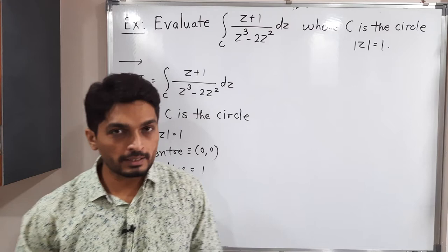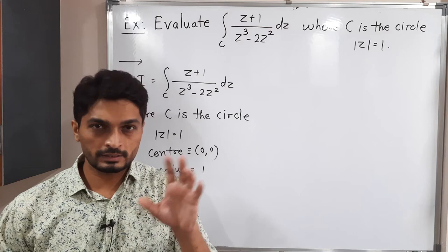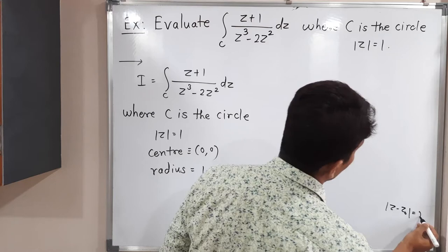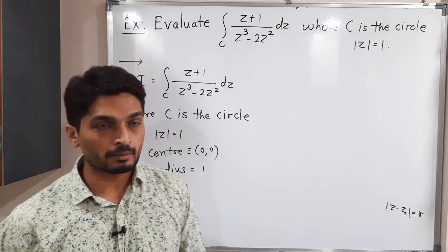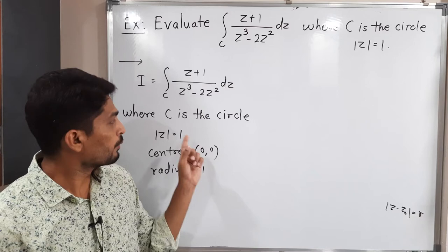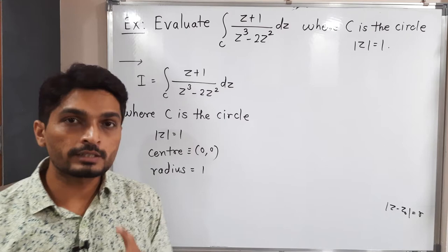Let us write the given integral first. They have mentioned this integral over a curve C, where C is a circle, and mod Z is equal to 1. You know that the standard equation of a circle is mod(Z − Z₀) = R, where its center is Z₀ and radius is R. Comparing, Z₀ is 0, so the center is the origin, and the radius is 1.